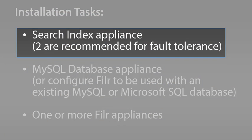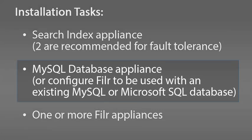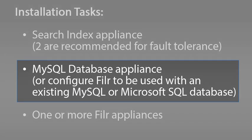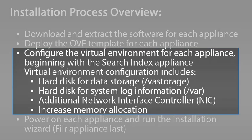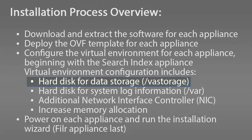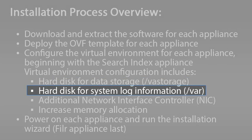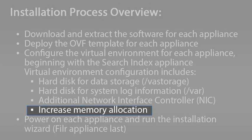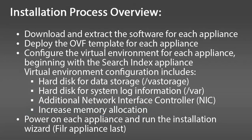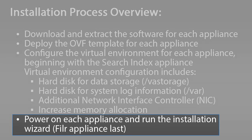Now that the Lucene Search Index Appliance is configured and running, you need to configure the virtual environment and installation for the MySQL database appliance and then for the Filer appliance. Go through the same process for these two appliances as you did for the search index appliance. Remember that virtual environment configuration consists of creating a hard disk for data storage, creating a hard disk for system log information, adding an additional network interface controller, and increasing memory allocation if required. It is important that you power on the Filer appliance last, after powering on any search index and database appliances.